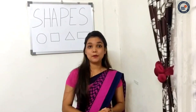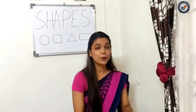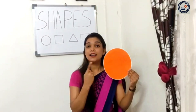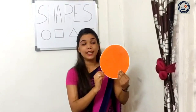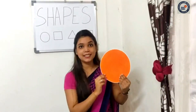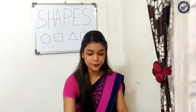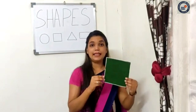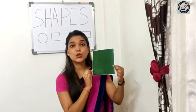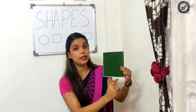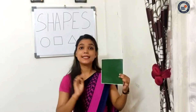Now we know the names of four shapes. This is a circle — it is a round shape. And this is a square. It has four equal sides.